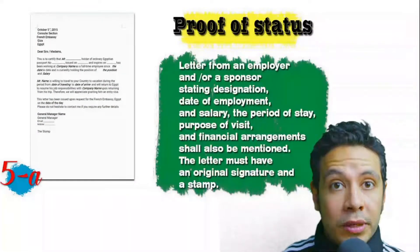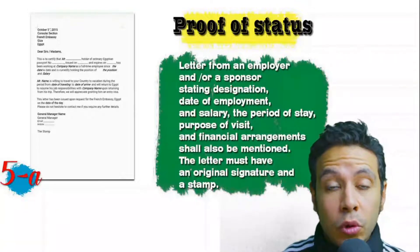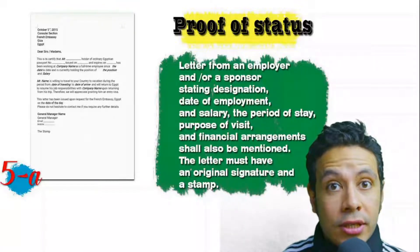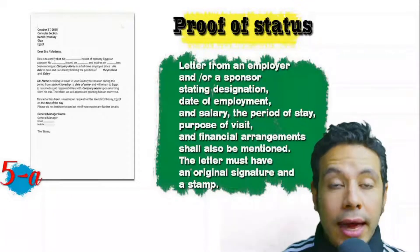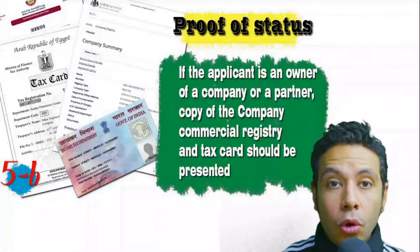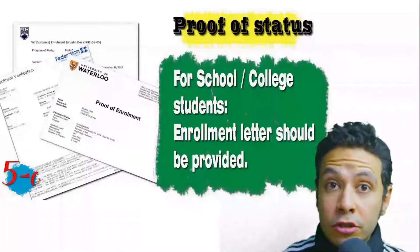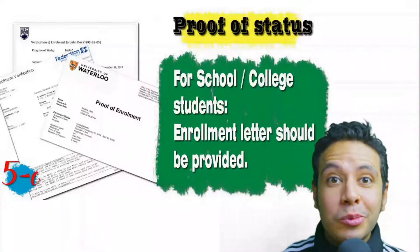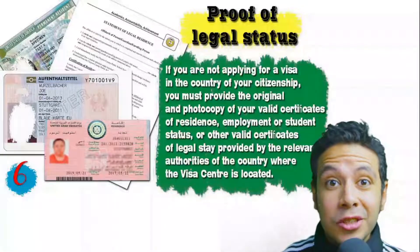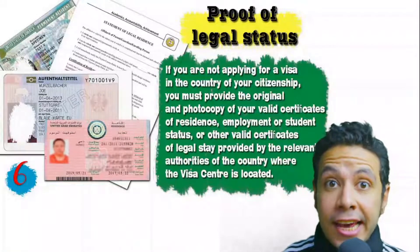In most visa processes, you will need a proof of status. If you are an employee, provide a letter from your employer or HR department stating your name, work details, salary, address, and contact numbers — with original signature and stamp. If you own a business, present your commercial registry and tax card. If you are a student, provide an enrollment letter from your university or school. If applying from a country different from your own, provide proof of legal residence or a valid residence visa for that country.